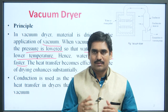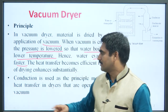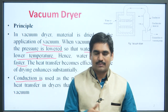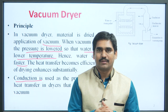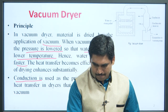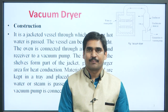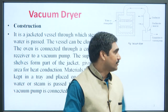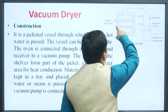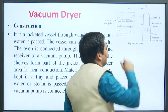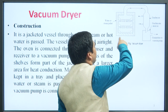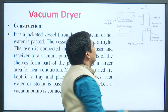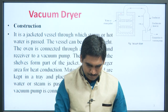In this case, the heat transfer mechanism used is conduction. With the help of this, heat is transferred between the particles. Now, the construction of vacuum dryer — first, it is a jacketed vessel. As you see in the diagram, this is the main vessel of the vacuum dryer. It is jacketed, and in this jacket, steam or hot water is passed.